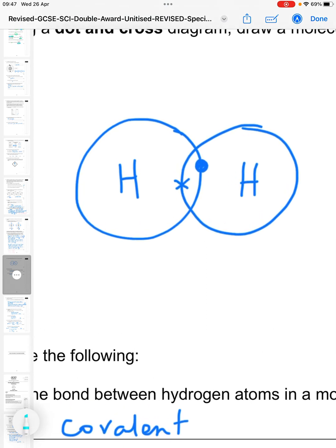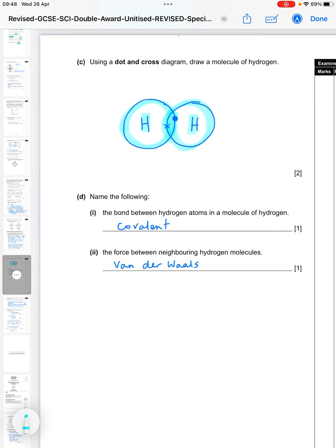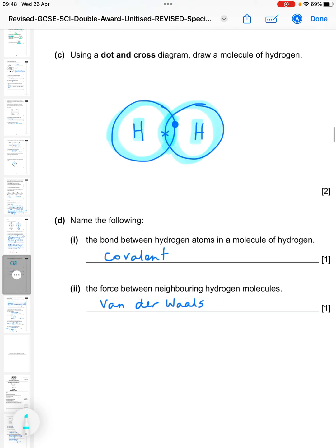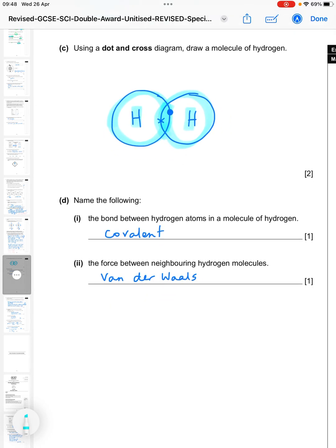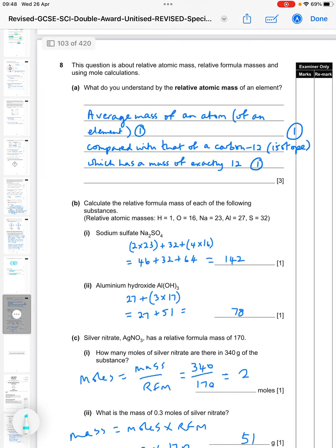Next bit, using a dot and cross diagram, draw a molecule of hydrogen. So I've just drawn the two circles here. There's one hydrogen with one electron and the other hydrogen with the other electron. Let them overlap. It doesn't really matter where you draw those electrons in the overlap as long as each hydrogen has one associated with it. And I write the H in the center so that you know what the atoms are. Then name the following. The bond between hydrogen atoms in a molecule of hydrogen - well, it's covalent. And then the force between neighboring hydrogen molecules is Van der Waals.